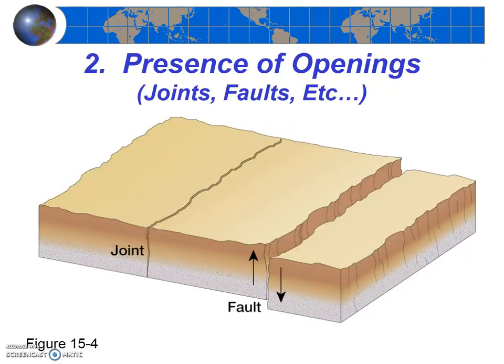Second, the presence of openings in a rock is very important. Your textbook discusses this at length. The type of opening depends on the rock. Openings might include pore spaces, joints, faults, air vesicles, and solution cavities. Review your textbook if you are unsure what any of these openings are. The more openings in a rock, the more opportunities for water and other substances to get in. Thus, more openings generally means more chemical weathering, because water can get into these openings.